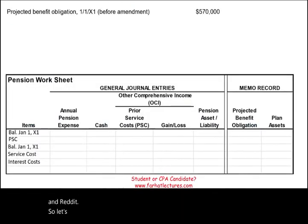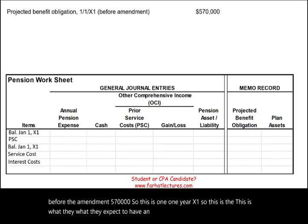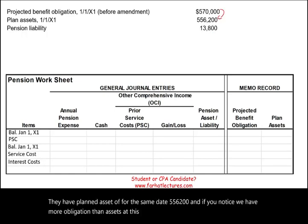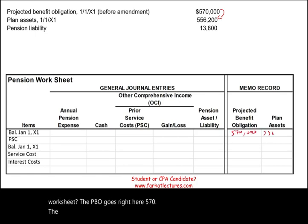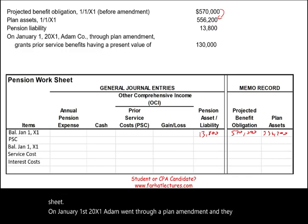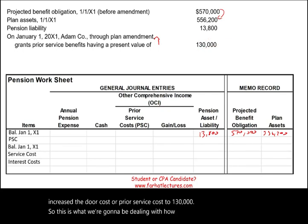Now let's look at a comprehensive example. The projected benefit obligation before the amendment is $570,000 as of January 1, X1. Plan assets for the same date are $556,200. The plan is underfunded by $13,800. On January 1, X1, Adam went through a plan amendment and increased the prior service cost by $130,000. On the worksheet, the PBO is $570,000, plan assets $556,200, and the difference is the starting pension liability.